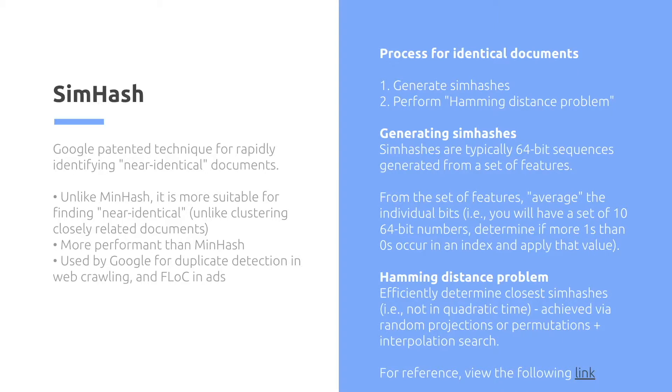So the process is you just generate the simhash, which is the first step. That's a 64-bit sequence generated from a set of features. So for a specific document, you might get a set of features, and then for each index, you basically determine which one's the dominant index. So the first index might be 1.